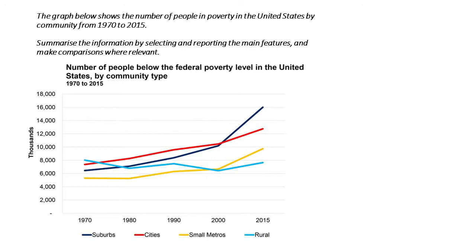The prompt reads: 'The graph below shows the number of people in poverty in the United States by community from 1970 to 2015. Summarize the information by selecting and reporting the main features, and make comparisons where relevant.'